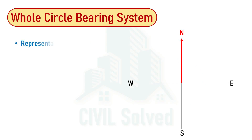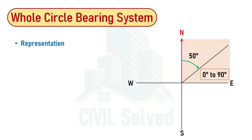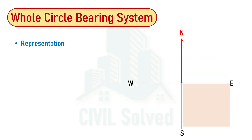As far as the representation of a bearing of a line is concerned in the Whole Circle Bearing system: if the line lies in the northeast quadrant, the angle should be from 0 to 90 degrees. For example, if the line lies here and that angle is 50 degrees, the representation is just the degree symbol along with the angle. Similarly, if the line lies in the southeast quadrant, the angle would be from 90 to 180 degrees.